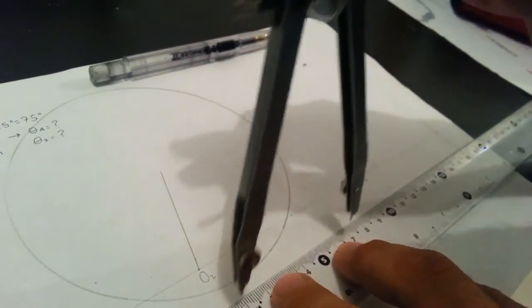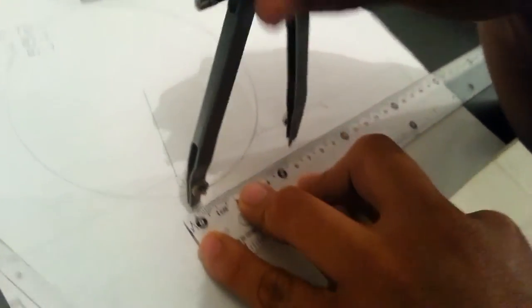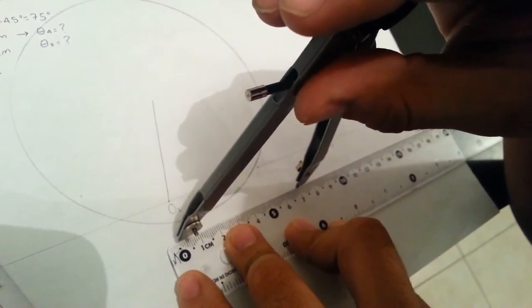After, you have to take the compass again and open it 7 cm to do link 4.